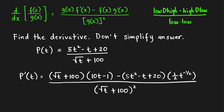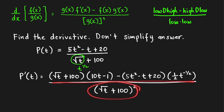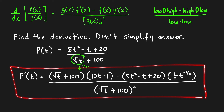Then minus high times the derivative of the denominator. Our denominator is √t, which equals t^(1/2). The derivative of t^(1/2) is found by bringing down the power and subtracting 1 from the power. Plus 0, since the derivative of a constant is 0. All over the square of the denominator. This is the derivative of p(t).